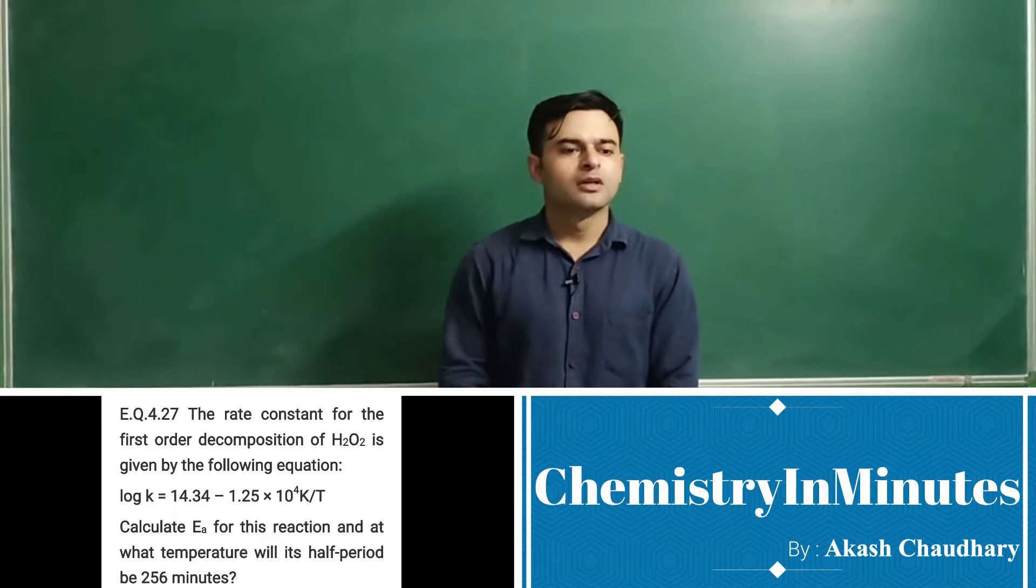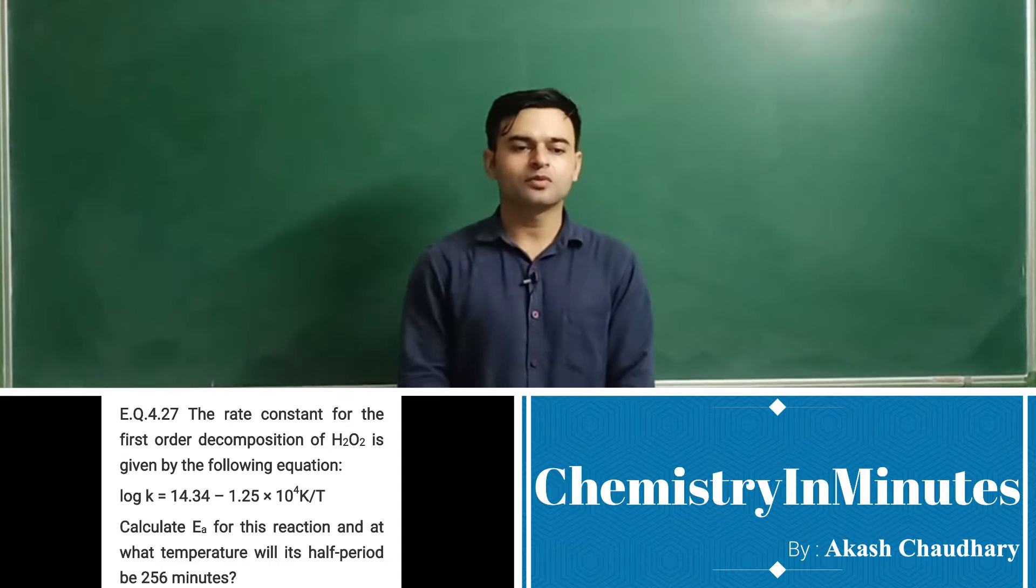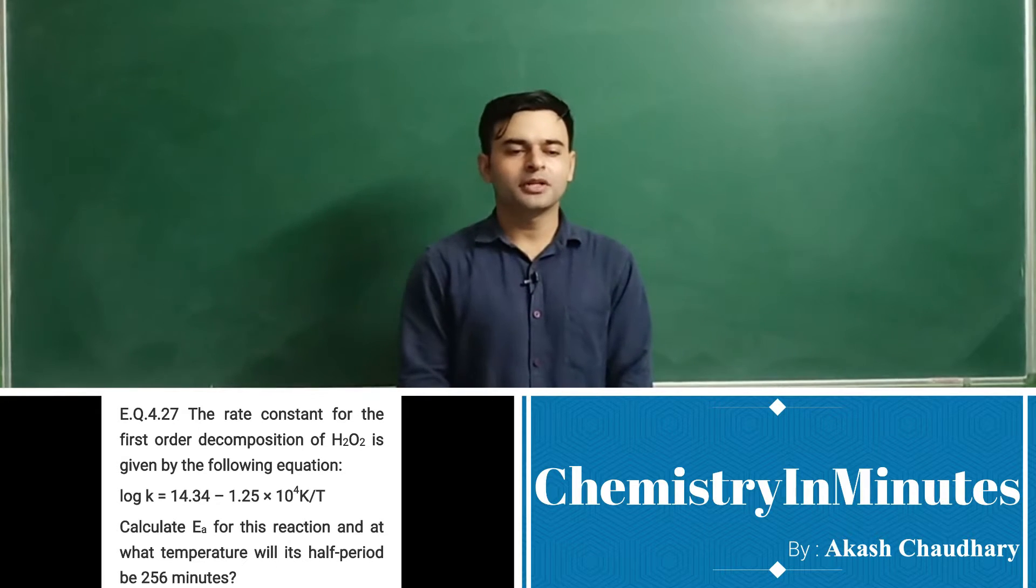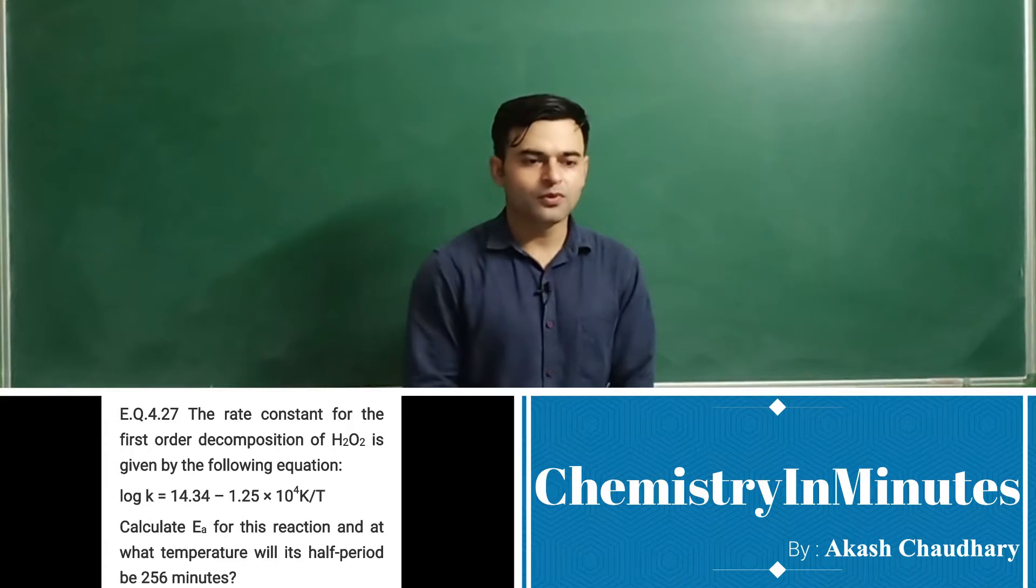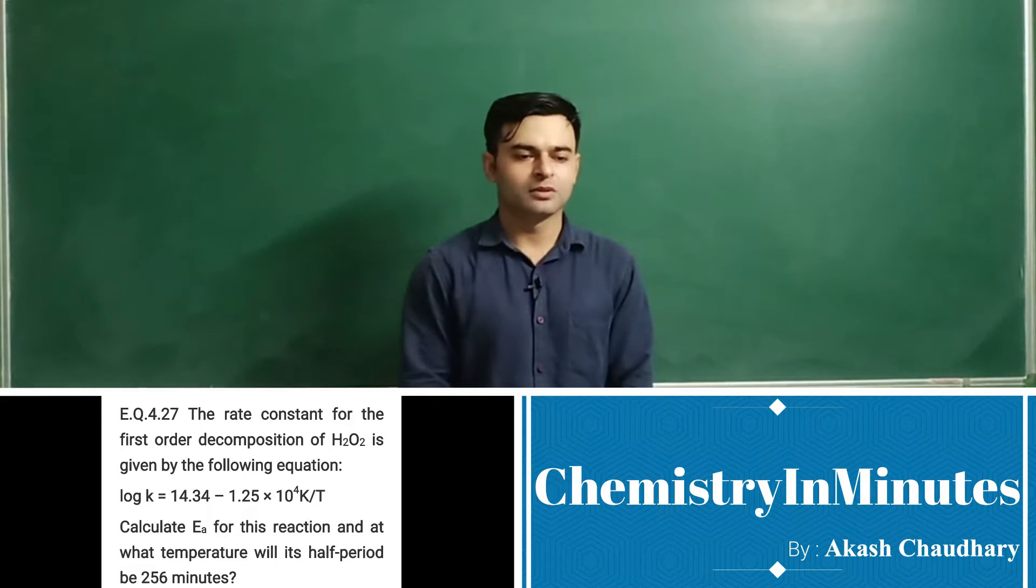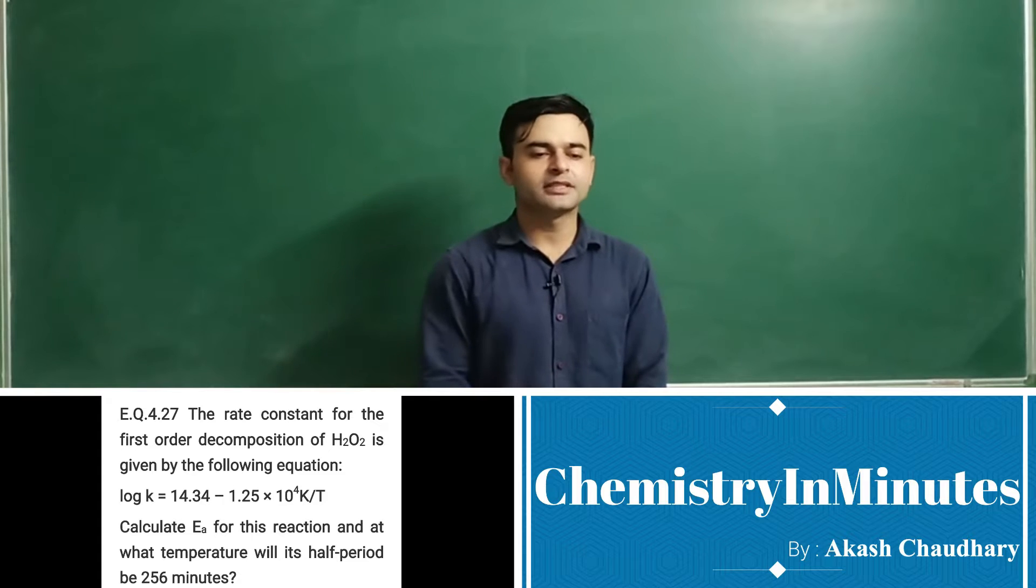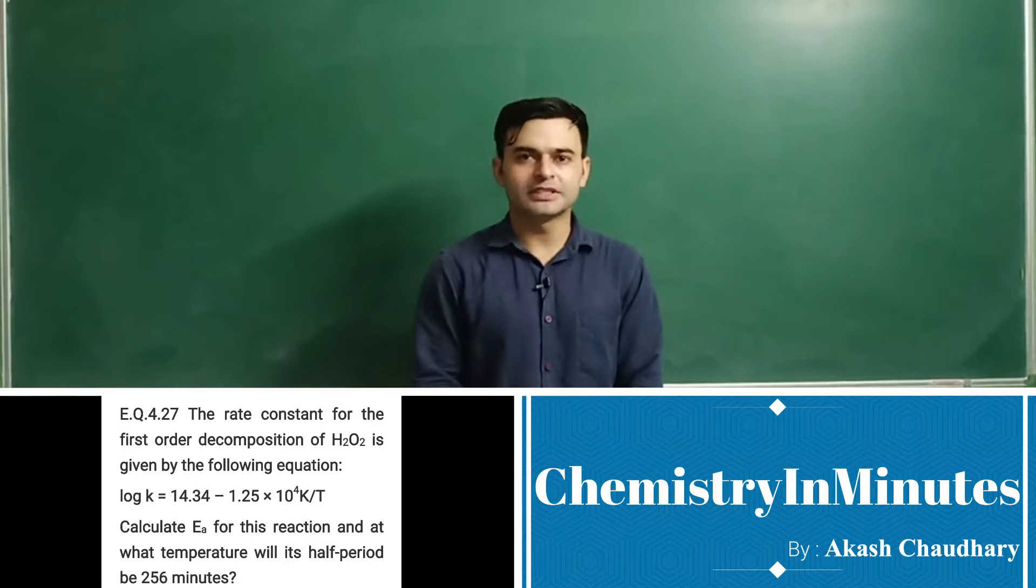The question is: the rate constant for the first order decomposition of N2O2 is given by the following equation. Log k equal to 14.34 minus 1.25 into 10 raise to the power 4 Kelvin upon T. Calculate Ea for this reaction and at what temperature will its half period be 256 minutes.